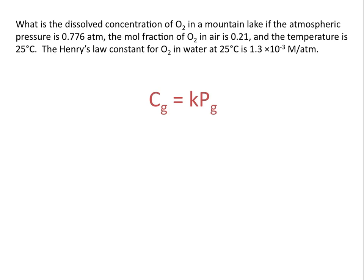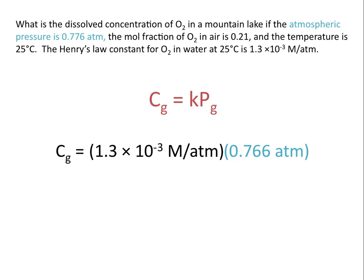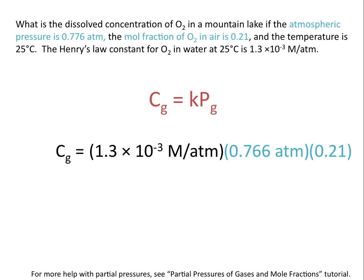This problem isn't any trickier than the one we just set up, although you do need to remember that P sub g is the partial pressure of the gas over the solution. In this case we're told the atmospheric pressure and the mole fraction of the gas, so we need to use those numbers to calculate our partial pressure. C sub g, the concentration of dissolved oxygen, is equal to the Henry's Law constant 1.3 times 10 to the negative third molar per atmosphere, times the partial pressure of the gas. We calculate the partial pressure by taking the total pressure, 0.766 atmospheres, times the mole fraction of the gas, 0.21.